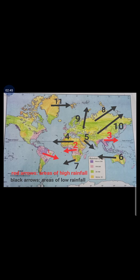In your exams, questions generally come in this way — an arrow is marked and they ask you to identify the area which receives high rainfall. So to summarize: number one is the equatorial regions in South America, number two is the equatorial regions of Africa, and number three is the equatorial regions of Southeast Asia.